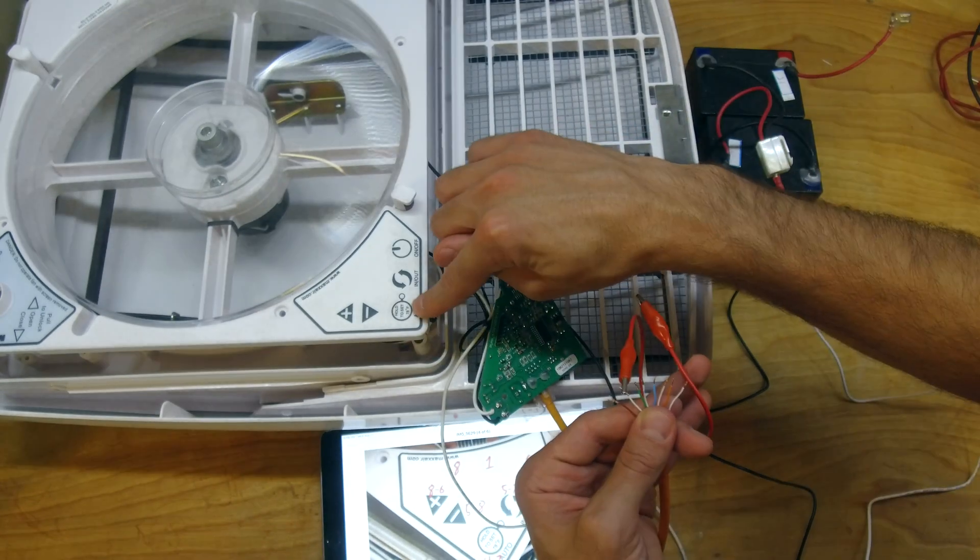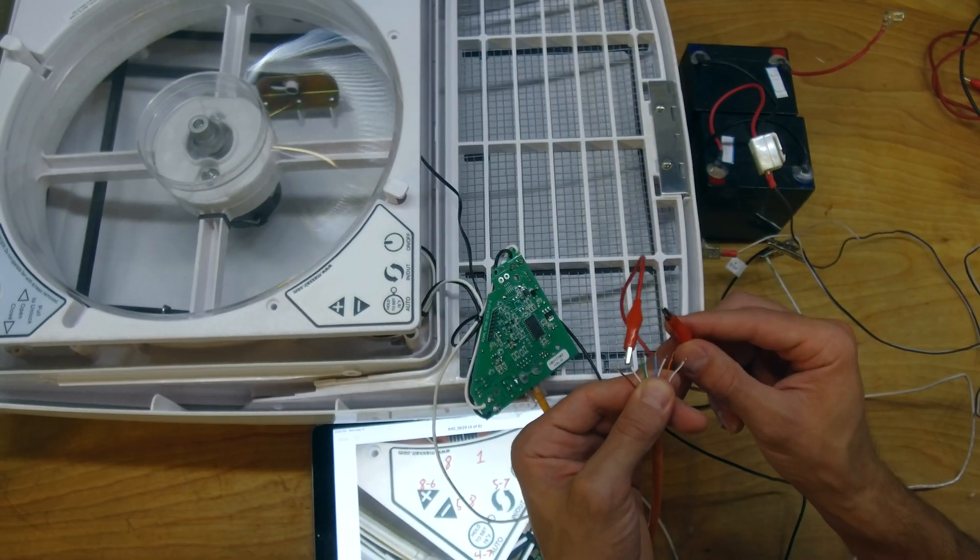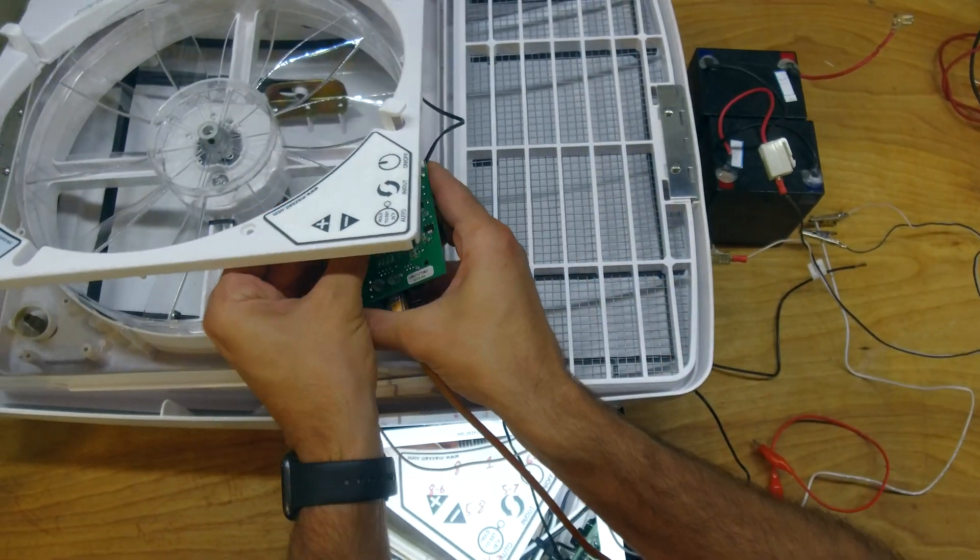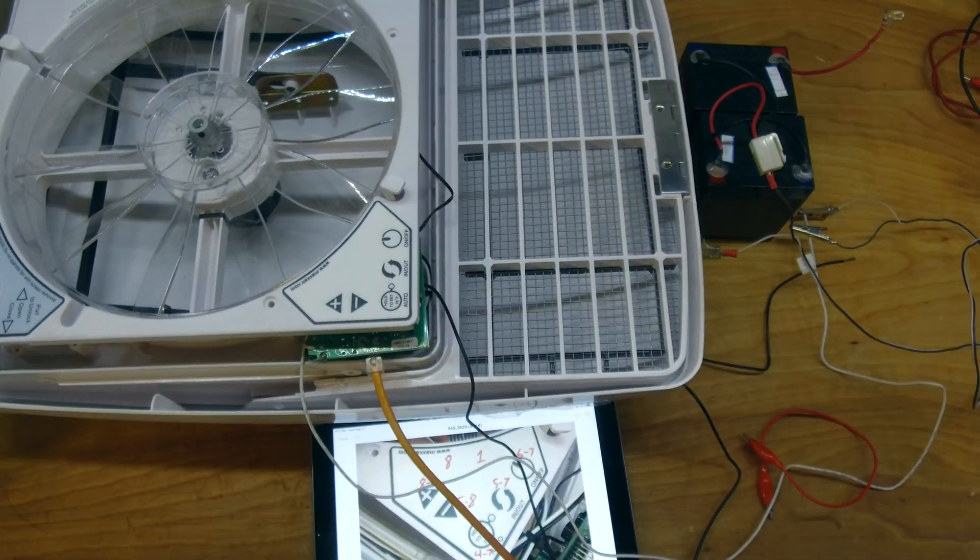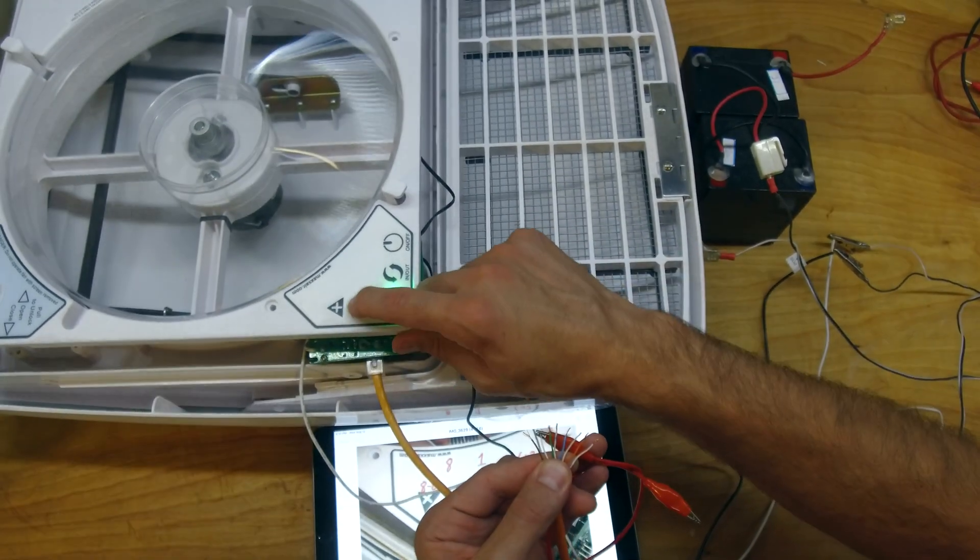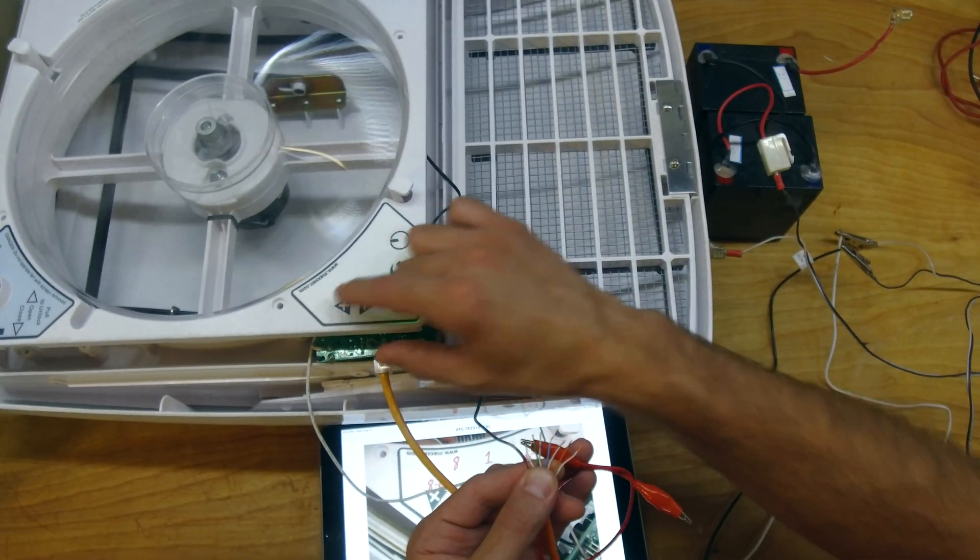For the next two minutes or so, I blabbed about how the hold button works and tested it out, but the manual covers that information so I think I should spare you. Then I reconnected the circuit board to the control panel and verified that we can use both the buttons and the Ethernet cable to control it at the same time.